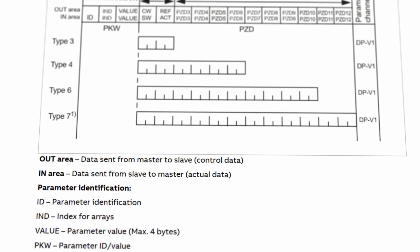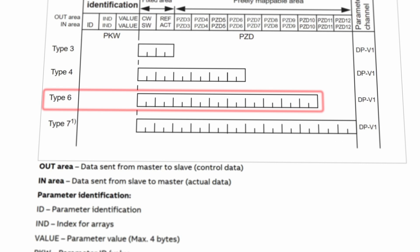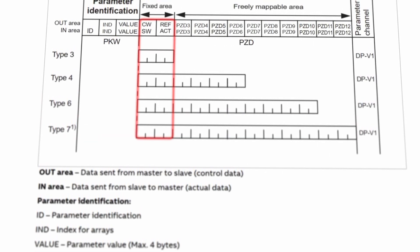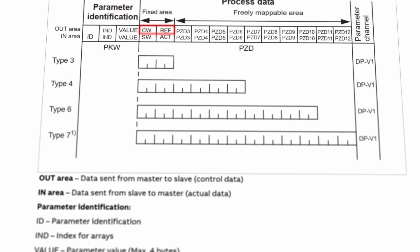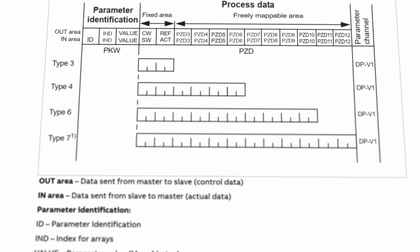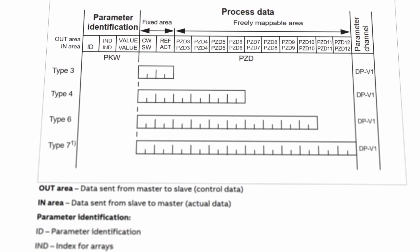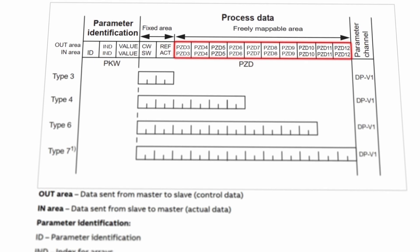There are several predefined PPO types available such as type 3, 4, 6, and 7. All PPO types include two fixed parameters: control word and speed reference sent to the drive, as well as status word and actual speed sent to the controller.